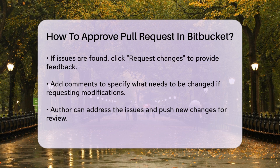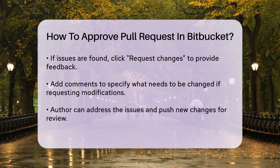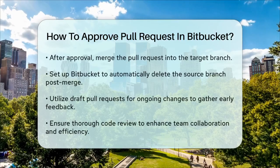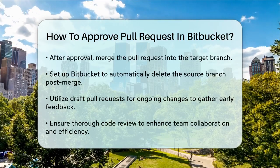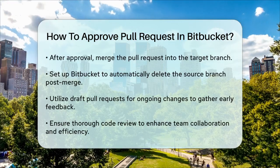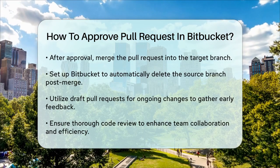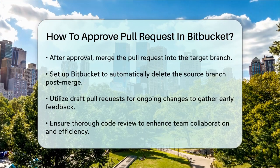After approving the pull request, the next step is to merge it into the target branch. Once all required approvals are in place, the author or a repository owner can merge the changes. You can set up Bitbucket to automatically delete the source branch after the merge, keeping your repository tidy.